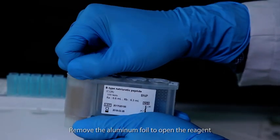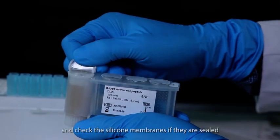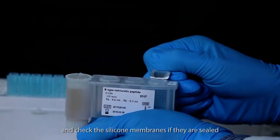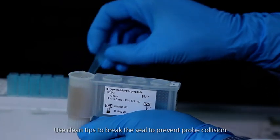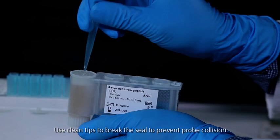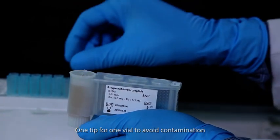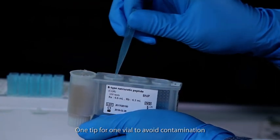Remove the aluminum foil to open the reagent and check the silicone membranes if they are sealed. Use clean tips to break the seal to prevent probe collision. One tip for one vial to avoid contamination.